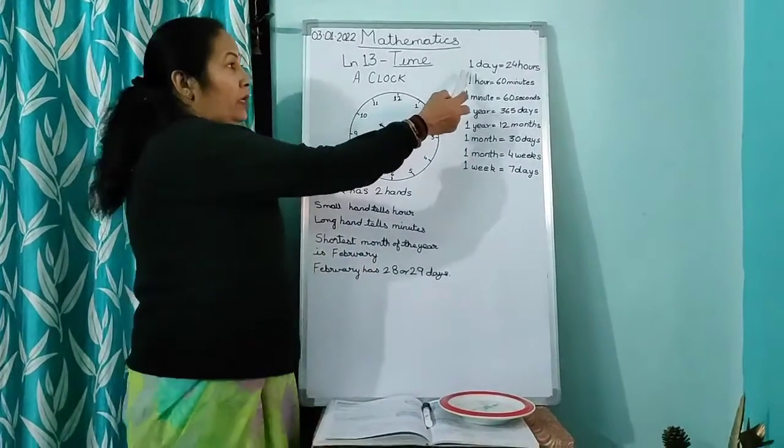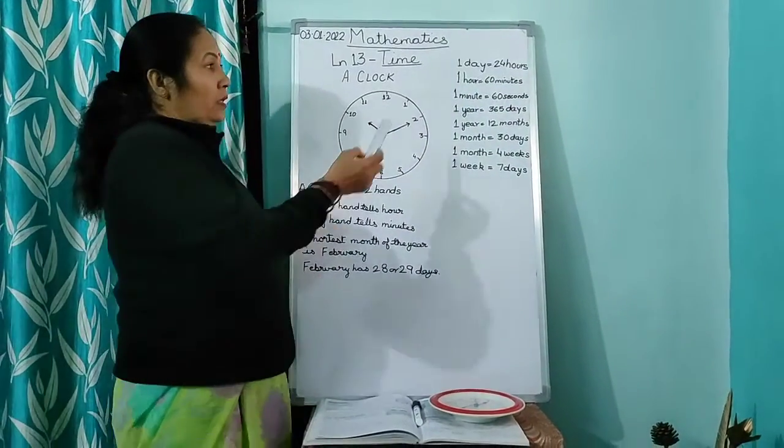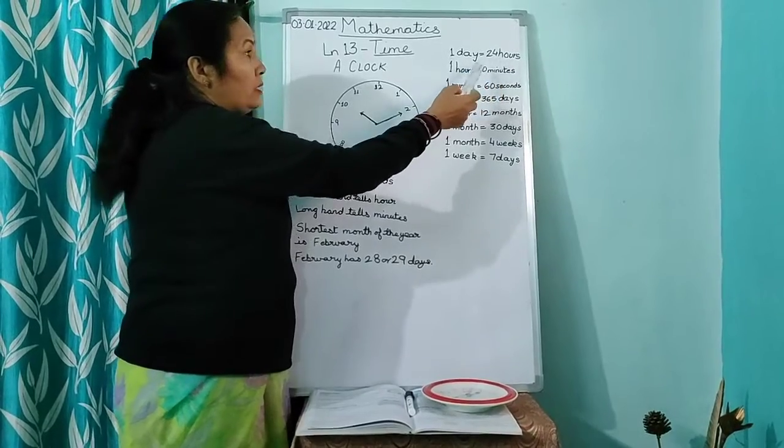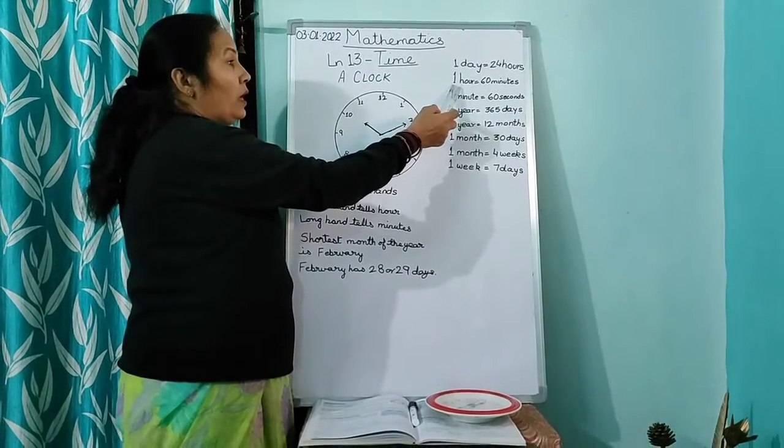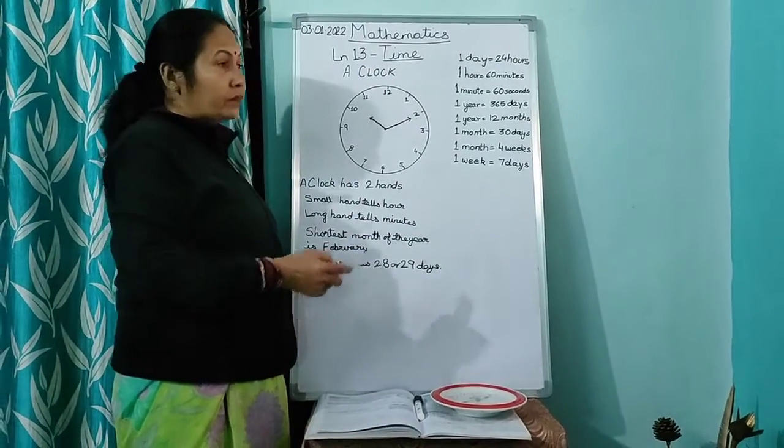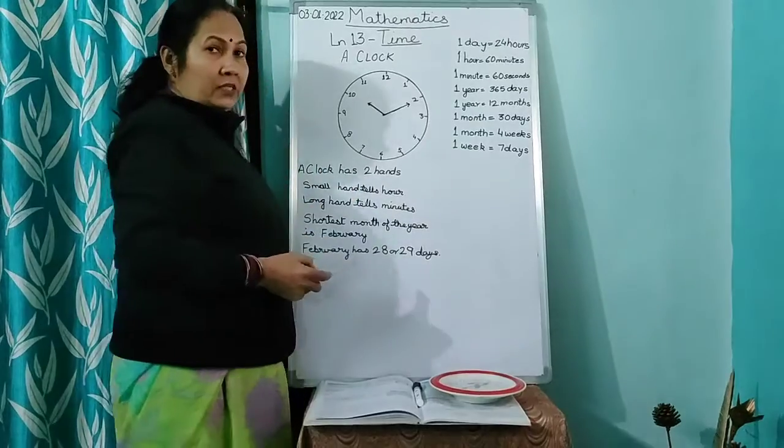Now see, 1 day is equal to 24 hours. In 24 hours, you have 1 hour which is equal to 60 minutes. Now, 1 minute is equal to 60 seconds.